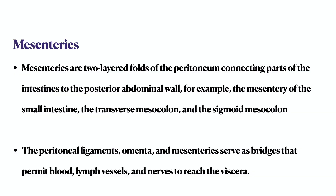Mesenteries are two-layered folds of peritoneum that connect parts of the intestines to the posterior abdominal wall. Examples include the mesentery of the small intestine, the transverse mesocolon, and the sigmoid mesocolon. Peritoneal ligaments, omenta, and mesenteries serve as bridges and they permit blood vessels, lymph vessels, and nerves to reach the viscera.